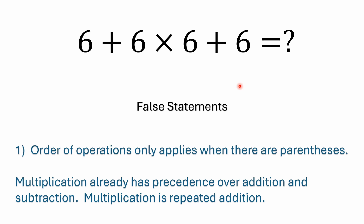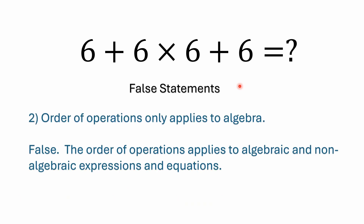The second false statement — order of operations only applies to algebra — is also false. The order of operations applies to both algebraic and non-algebraic expressions and equations. I don't really know where that false rumor got started. The order of operations goes back to some of the earliest books on algebra, back in the 16th century — we're talking the mid-1500s — but it certainly doesn't mean it only applies to algebra. That's just not true.